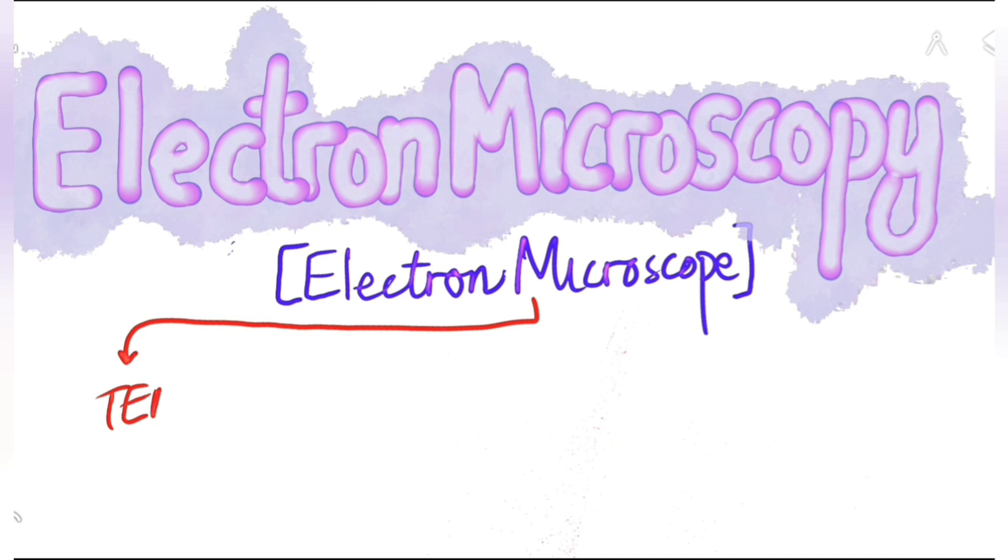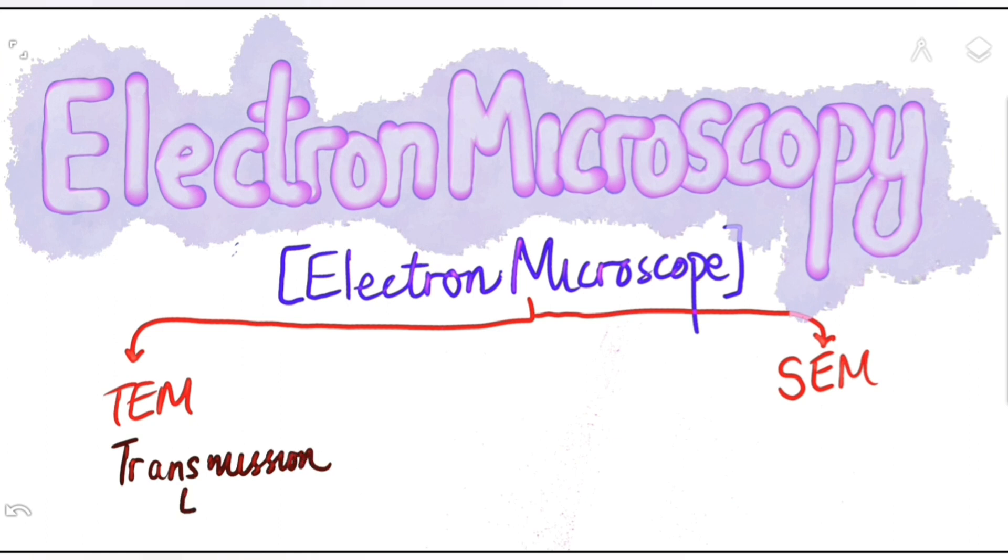We have two types of electron microscopes: the TEM and SEM. TEM stands for transmission electron microscope and SEM stands for scanning electron microscope.